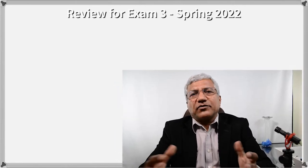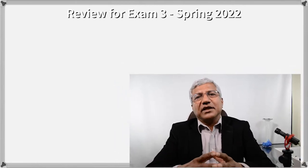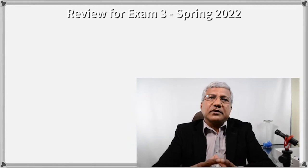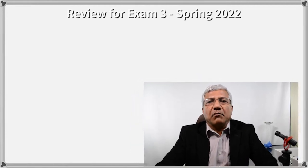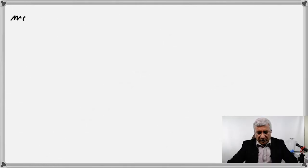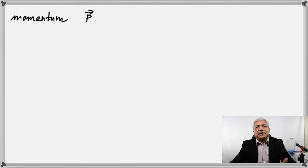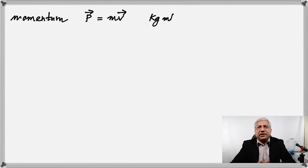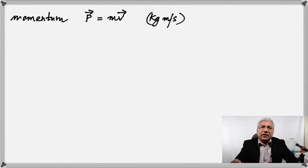A large number of questions on the exam is based on momentum, so that is the most important chapter. Momentum is the product of mass and velocity. Mass has to be in kilograms and velocity in meters per second, so the unit of momentum is kilogram meter per second.